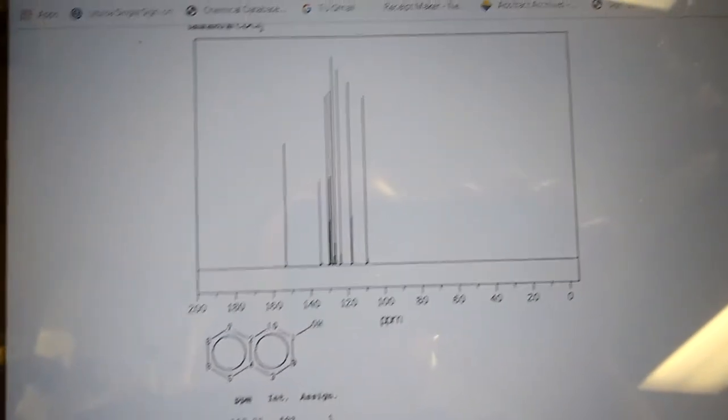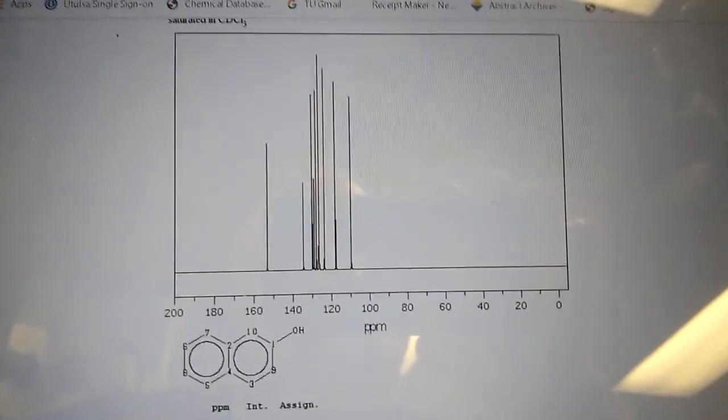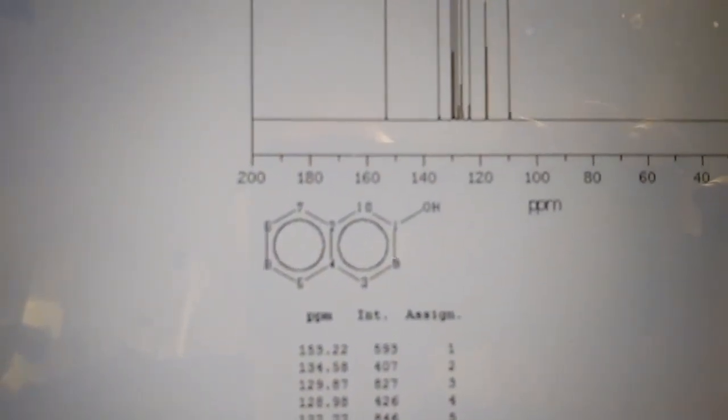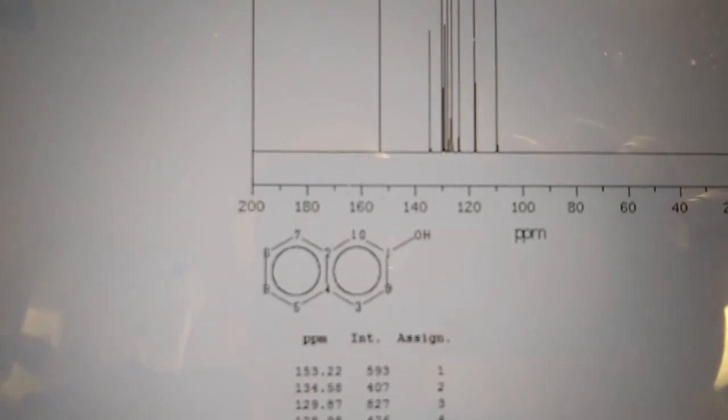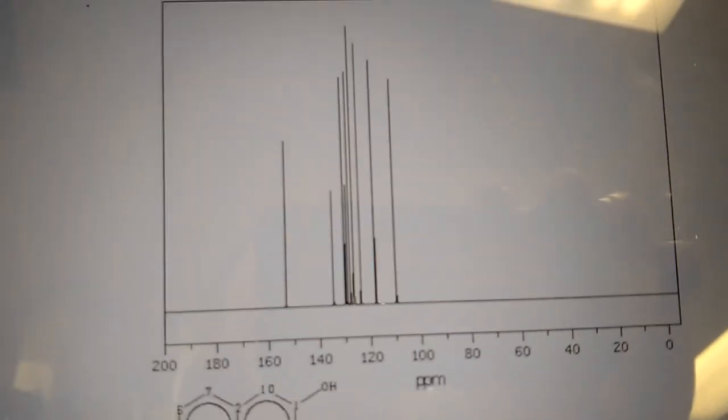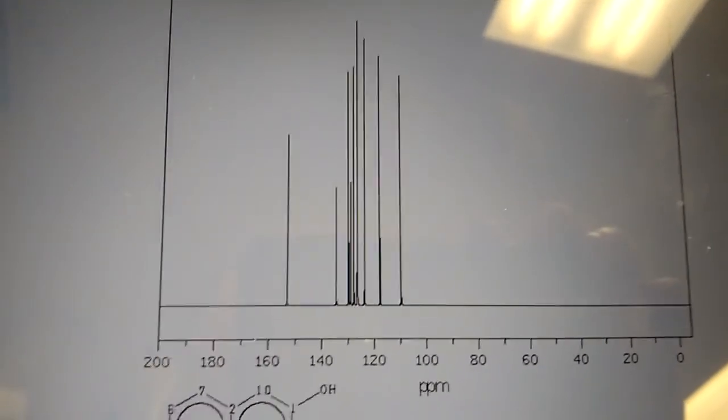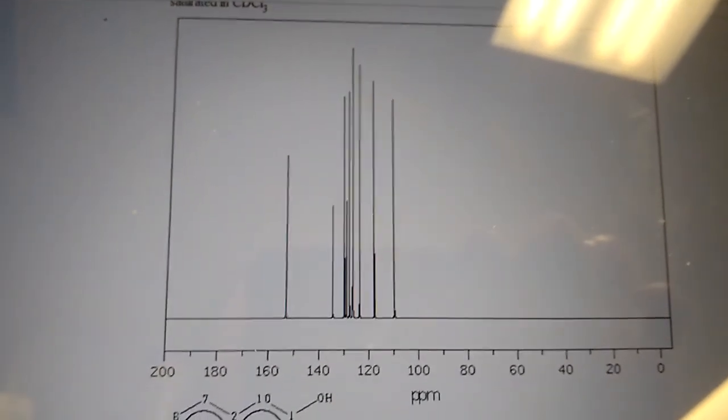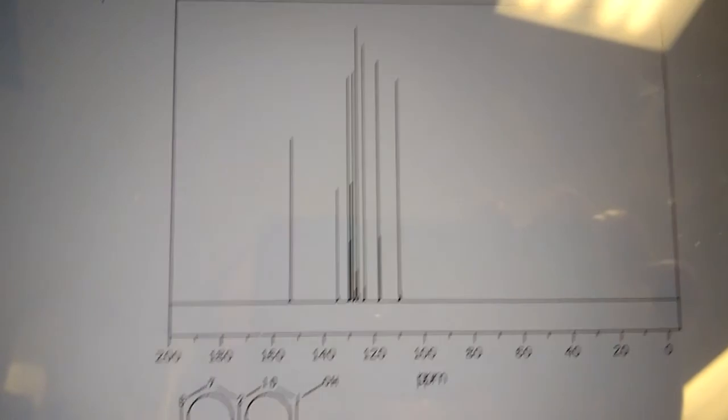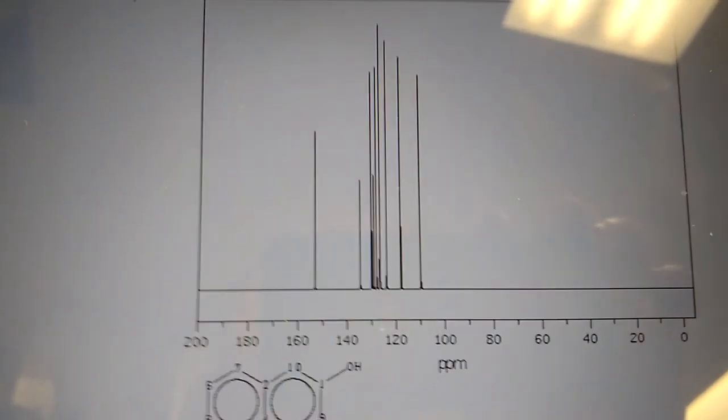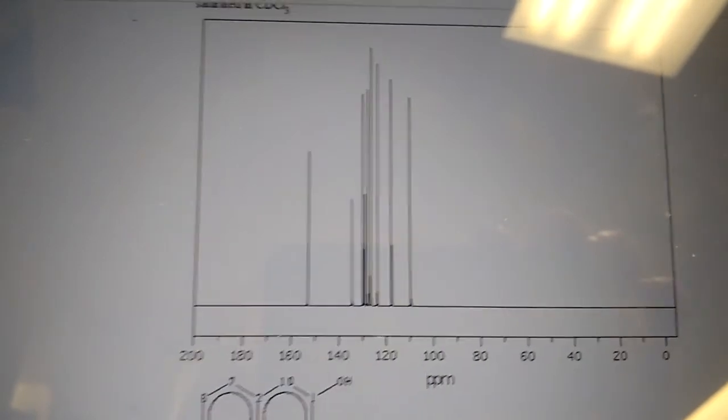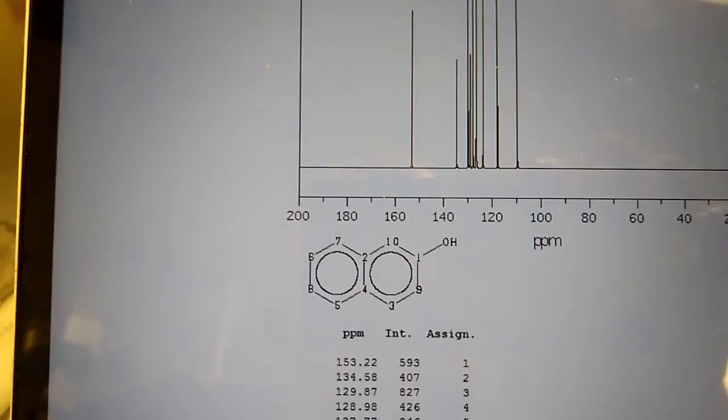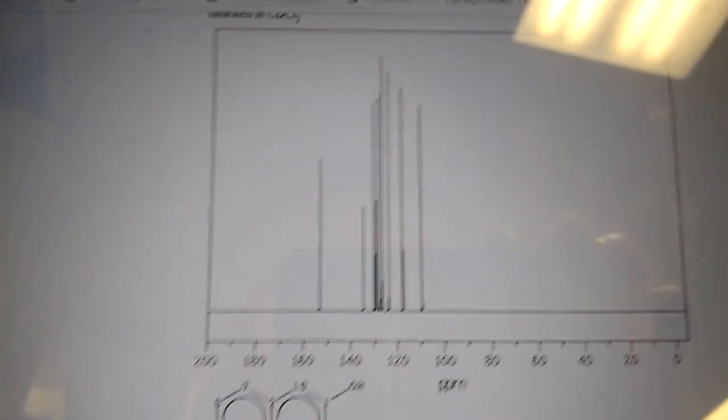For carbon NMR, it can be a lot simpler. If you look at your structure, you've got ten total carbons and they are all aromatics. So when I say simpler, I mean that for the sake of this course, you won't see any splitting in a carbon NMR, and you also, the integrations are, for us, they're meaningless. So the height of the signal doesn't tell you anything.